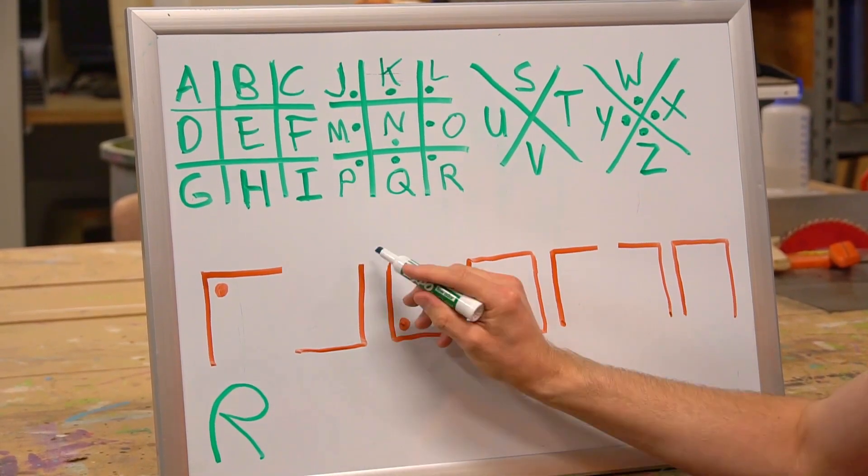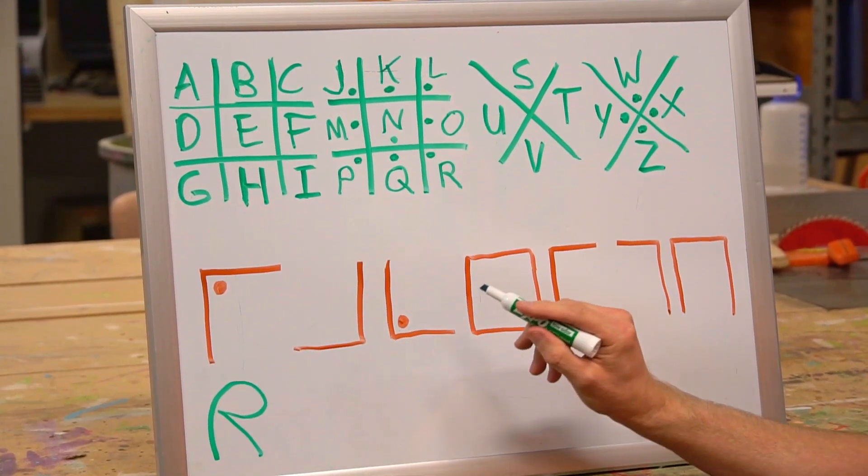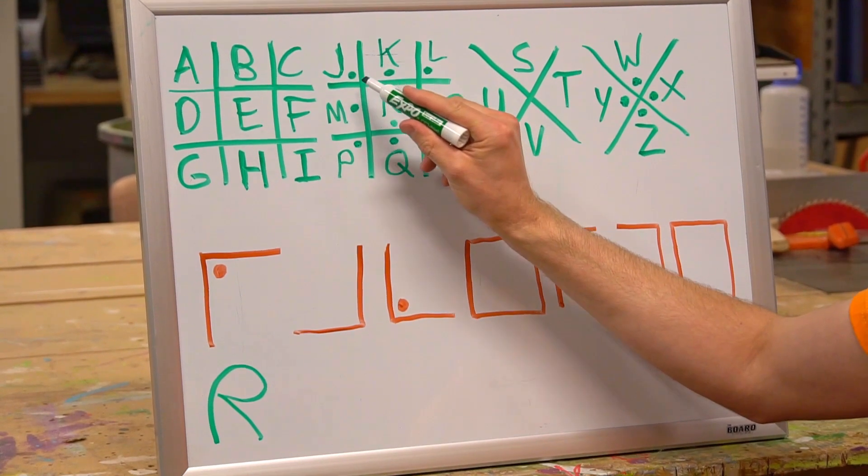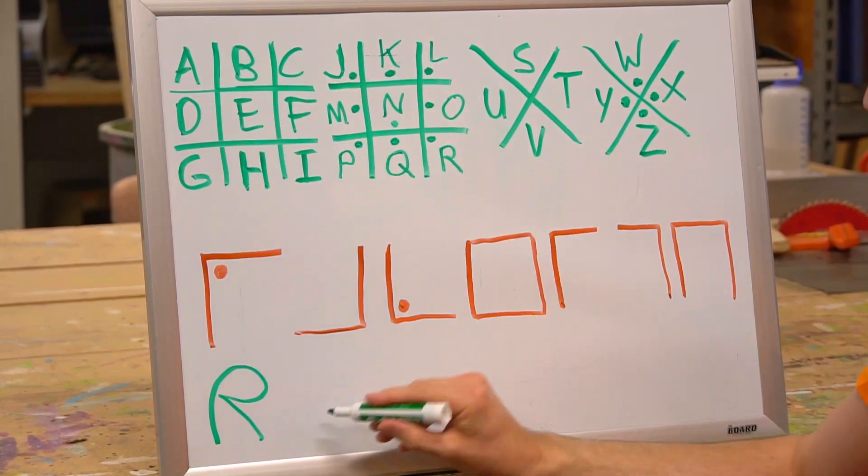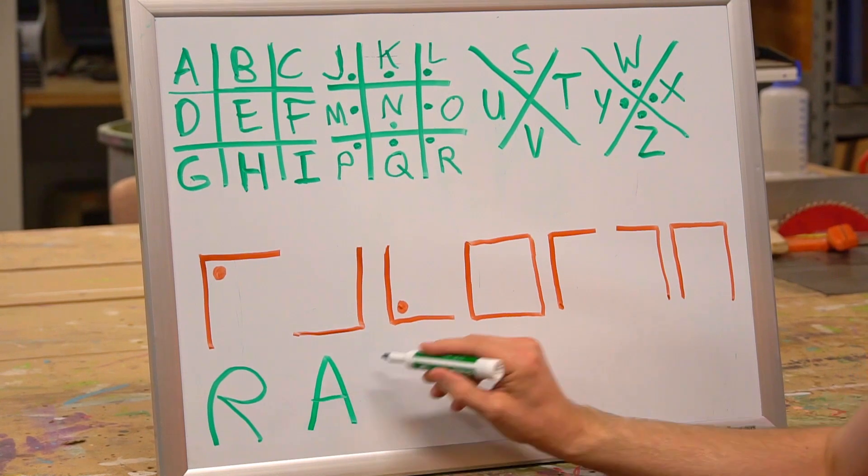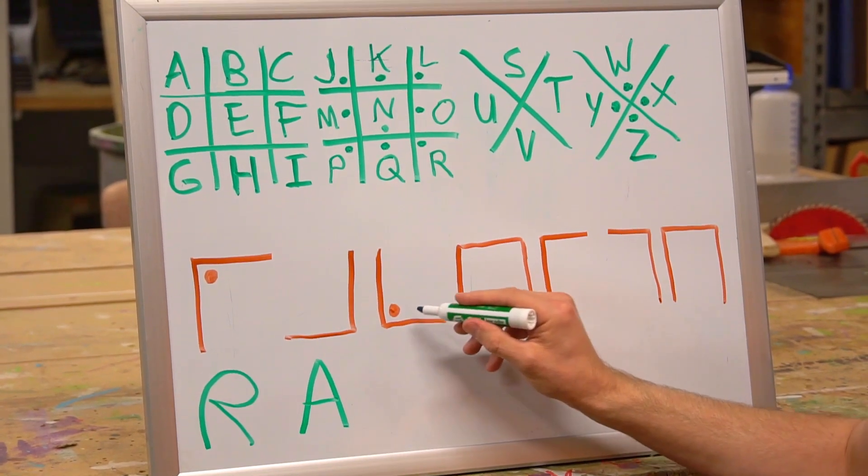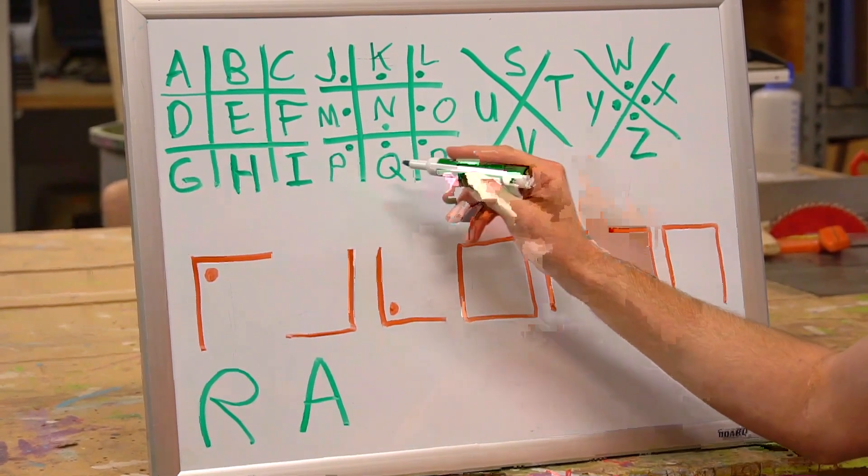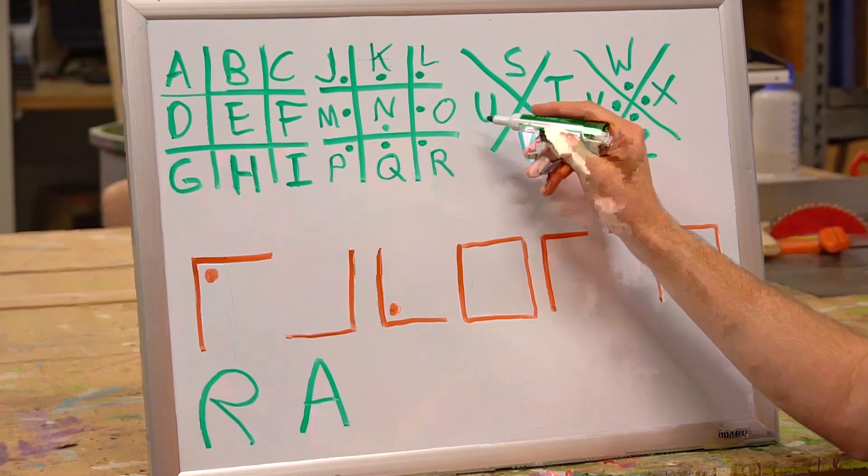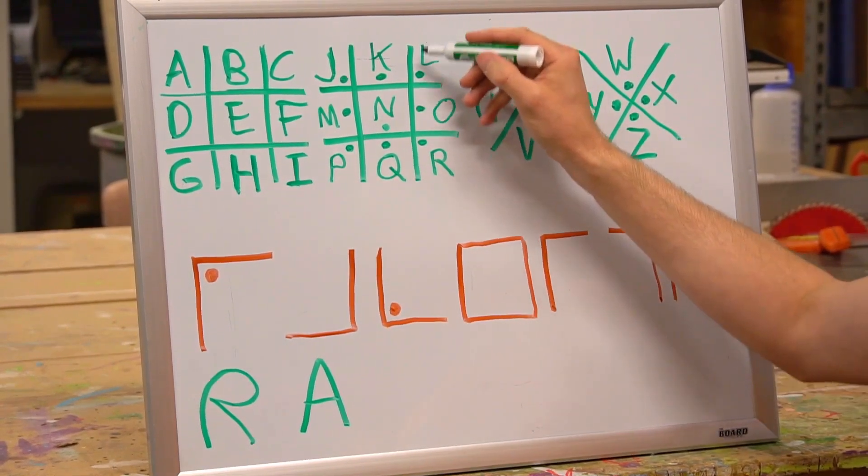And this one here is just two lines without a dot. So it's not that one. It looks like an A. Here's two lines and a dot. That one looks like this L up here.